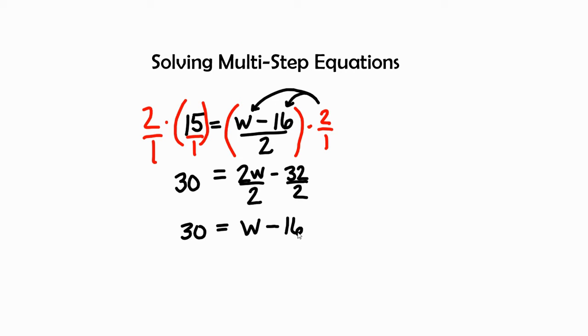We have one more step to go, so hang in there. So we ask ourselves: what is attached to this w? It is 16. And how is it attached? By a negative, or by subtraction. So how do I get rid of that and move it to the other side?